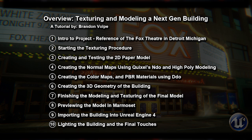The fifth lesson will be creating color maps and physically-based rendering materials using DDO. Then we'll be creating low-poly geometry. In the seventh lesson we're going to be finishing the modeling and texturing of the final model. In the eighth lesson we'll be previewing the model in Marmoset. After that, we'll import the building into Unreal Engine 4. And then the tenth final chapter will be lighting the building and the final touches.